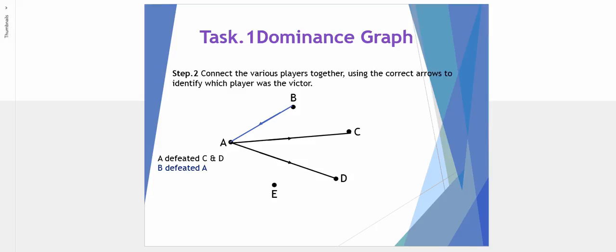B defeated A so the arrow is directed from B to A. B also defeated C. B also defeated C, and finally B also defeated E.